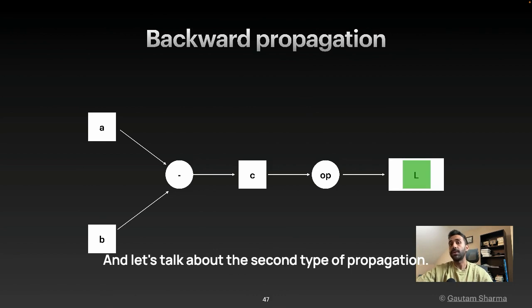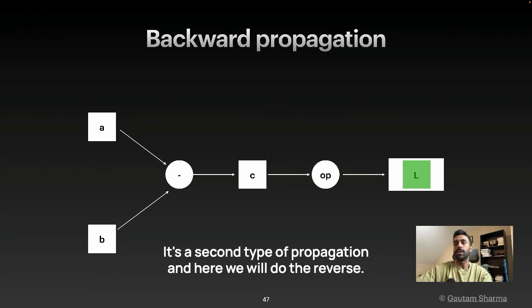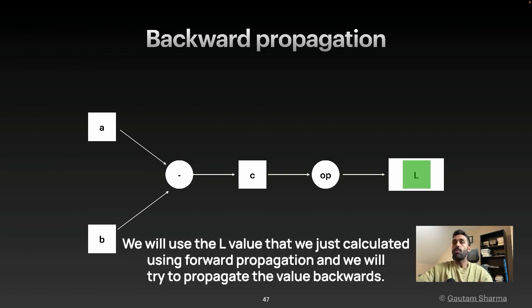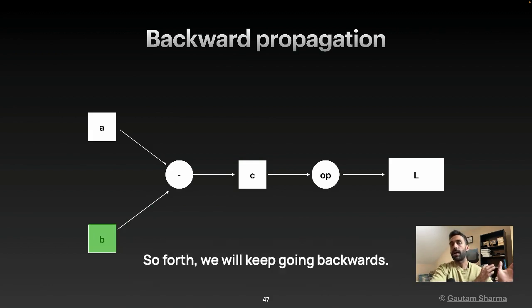And let's talk about the second type of propagation. That's the backward propagation. And here we get the loss and we propagate it backwards and calculate gradients all the way through. It's the second type of propagation. And here we will do the reverse. We will use the L value that we just calculated using forward propagation and we will try to propagate the value backwards. So for example, we will use L to calculate the gradients of C. And then we will use that value and calculate the gradient of P and so on so forth. We will keep going backwards.